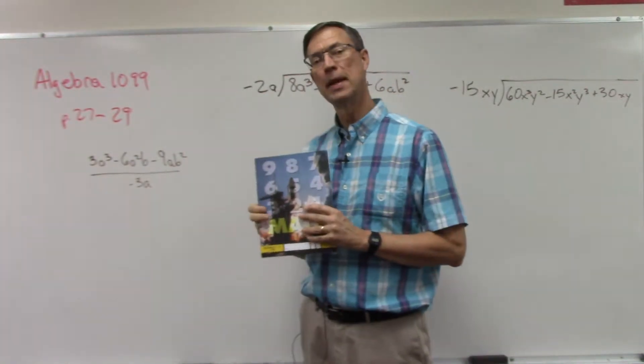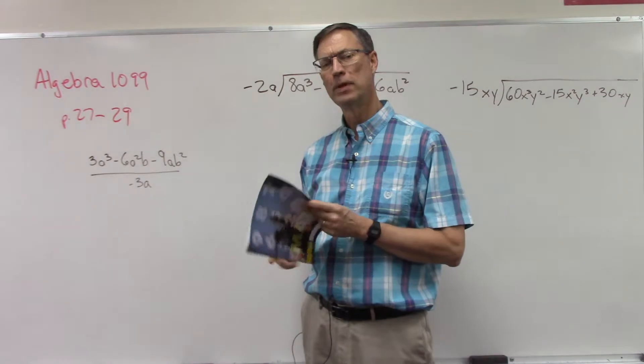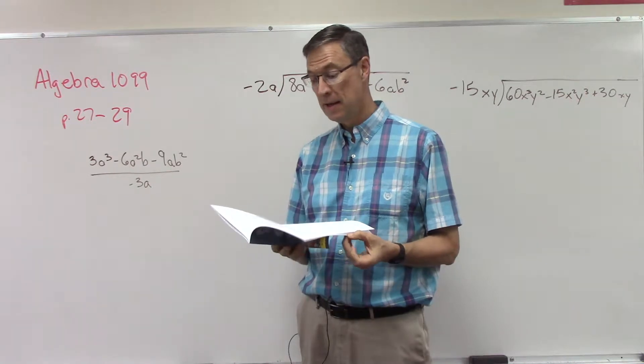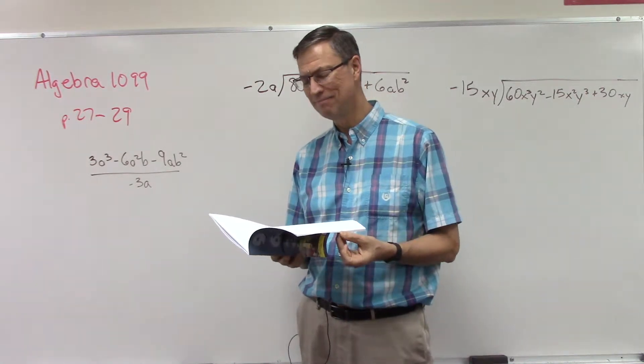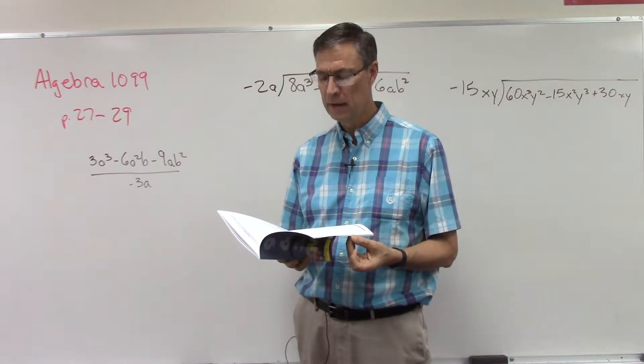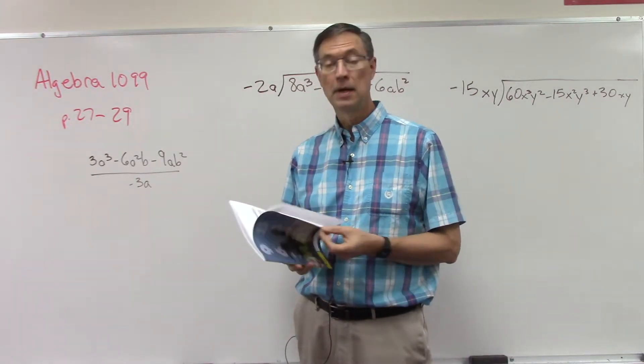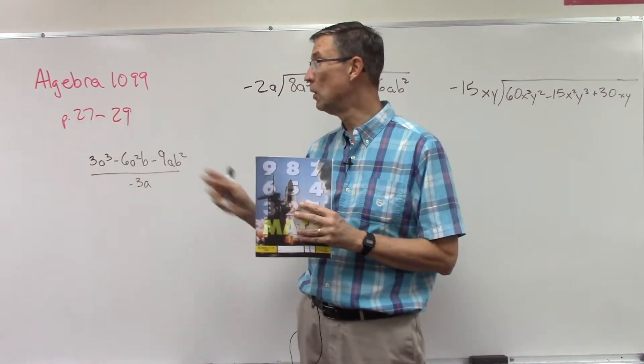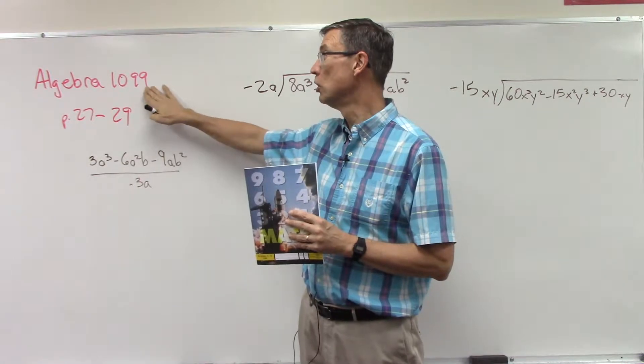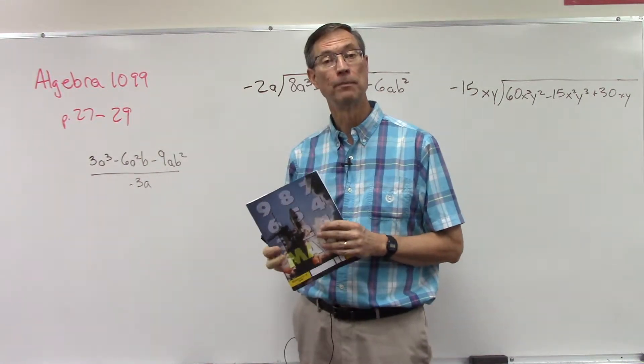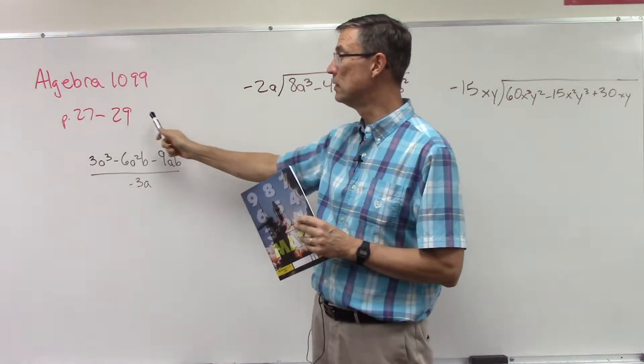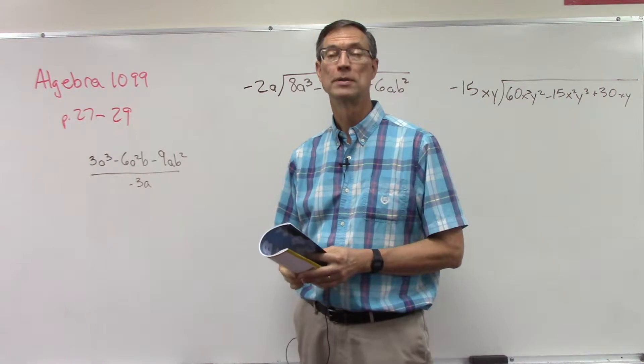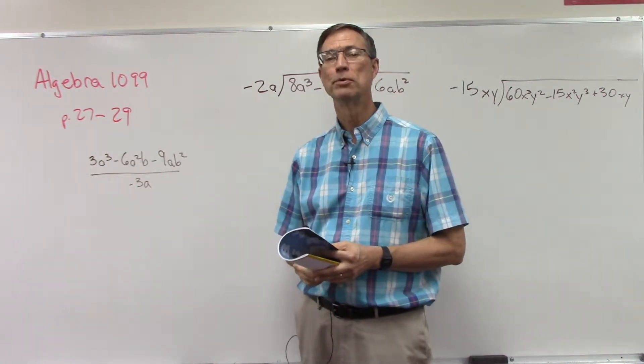We're going to take a look here at Algebra 1099. Hopefully the first part of the pace, the first half or so, you were able to get through all right. Looking at it, you're going from like terms to combining, adding like terms. This builds on the first two paces at the beginning, so hopefully you did well with that. If you do have an issue earlier in the pace, let me know. I do know that this concept here on pages 27 through 29 and then the last two more lessons after that, I think going over some examples together would be helpful.